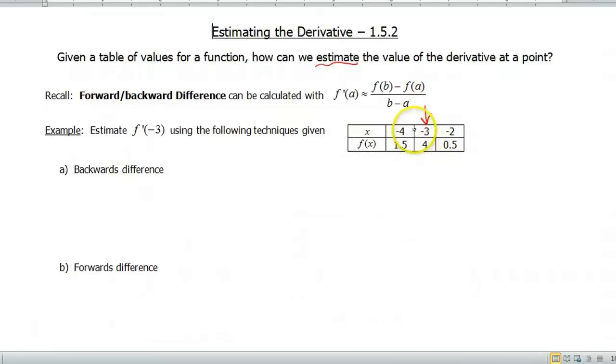To do the backwards difference, that means we're going to want to use the point before -3 as well as -3. So our backwards difference is going to look like f'(-3) is approximately equal to f(-3) minus f(-4) all over -3 minus -4. That's just following the formula up here. Remember that forwards and backwards are either just going to be using the one before or after, depending on which way you're doing. This formula is just a rule to follow for that.